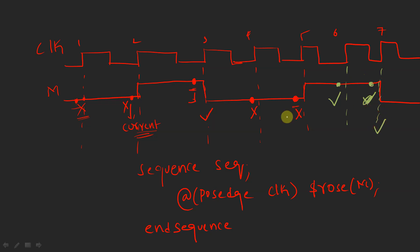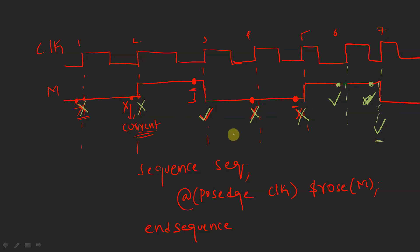To summarize: at the first clock edge the assertion fails, second fails, third passes, fourth fails, fifth fails, sixth passes, seventh passes. This is how the `$rose` function works. I hope you have a clear idea. If you like this video please like, share, and subscribe to our YouTube channel 'All About Real Estate.' Thank you.